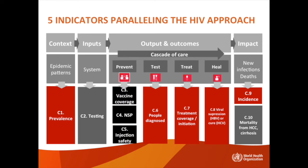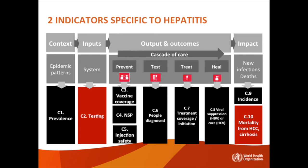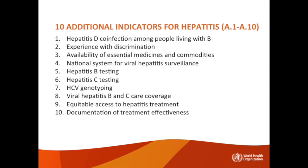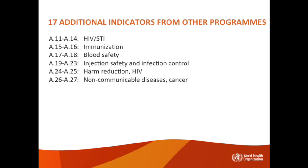Five indicators about the cascade are actually paralleling the approach used for HIV. Two indicators — C2 for testing and C10 on mortality — are new and specific to viral hepatitis. The ten additional indicators specific to viral hepatitis between A1 and A10 are not essential for international reporting; however, countries may choose to collect data on them. The seventeen additional indicators from other programs are already collected for other reasons; however, viral hepatitis programs may choose to monitor them as they may guide the implementation of activities for prevention and control of viral hepatitis.